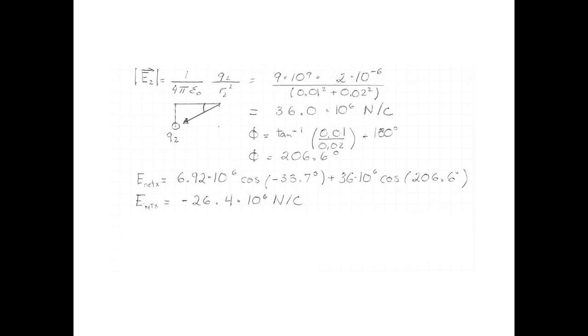Let's add up the components in the y-direction. The x-component of E1 is 6.92 times 10 to the power of 6 sin negative 33.7 degrees. The y-component of E2 is 36 times 10 to the 6 sin of 206.6 degrees. So the net field in the y-direction is negative 20 times 10 to the power of 6 newtons per coulomb.